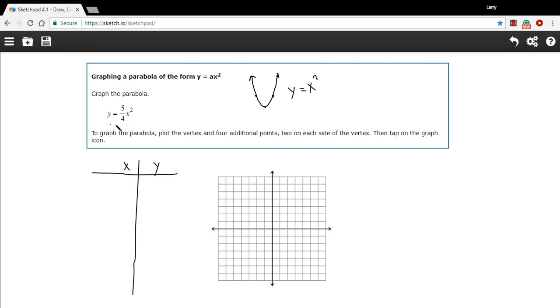So for problems like this in this form, y equals ax squared, your vertex is 0, 0. You can verify that mathematically. If you put in a 0 in this equation for x, 0 squared is 0 times 5 4ths is 0, so y equals 0. So that's our vertex right there at the origin.